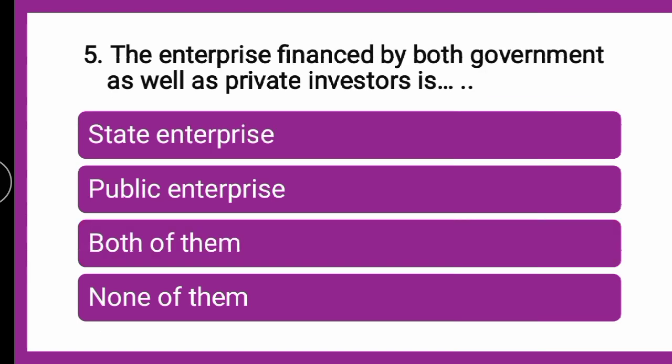Next question: The enterprise financed by both government as well as private investors is DASH — whether it is state enterprise, public enterprise, both of them, or none of them. That means, aisa enterprise jisko government as well as private investors bhi finance kar sakte hai — woh is mein se kaun sa hai? The correct answer is both of them — state enterprise as well as public enterprise.